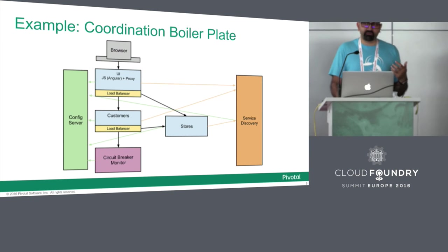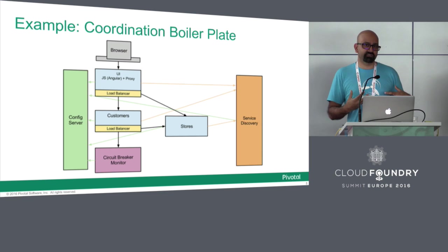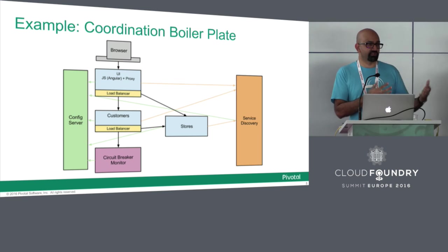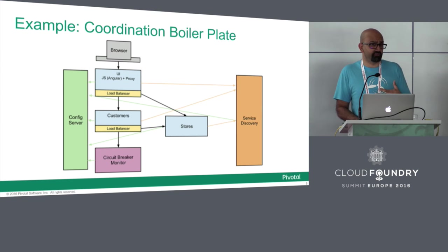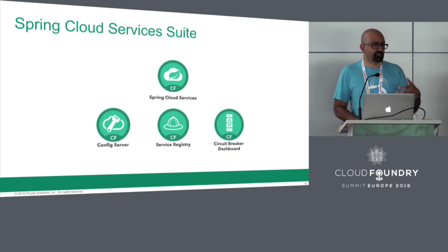If we had a service discovery component, every time a microservice comes up it registers, noting where it's running and its URL, so other clients can consume that at runtime. We could have a separate configuration server that stores vital information needed at runtime that isn't hard-coded in the application. What we're going to talk about today is how some of these components — which if you follow Netflix OSS and these patterns you might be familiar with — are packed into Pivotal's implementation of Cloud Foundry.